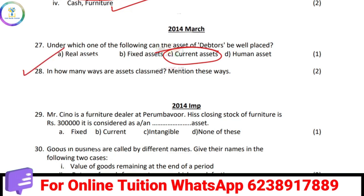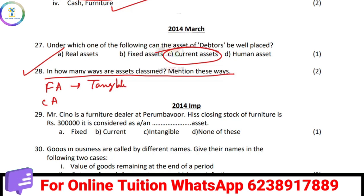How many ways are assets classified? Tangible, intangible, wasting assets, fictitious assets. In this class it is fixed assets. If your current asset is classified, there is no further classification. If it is a random mark in this example, it will be found in our three categories.